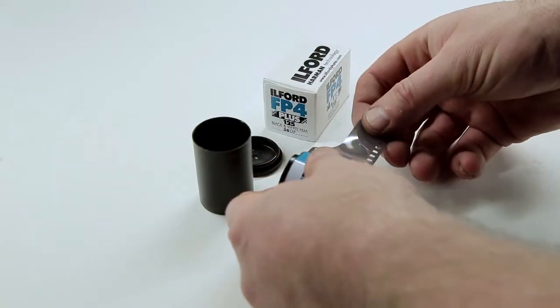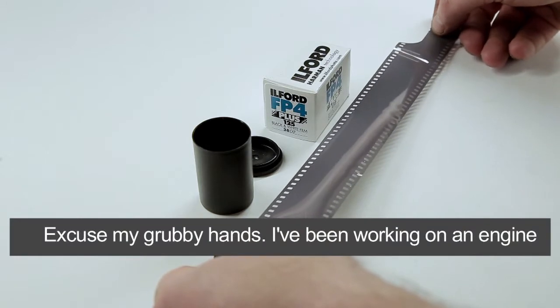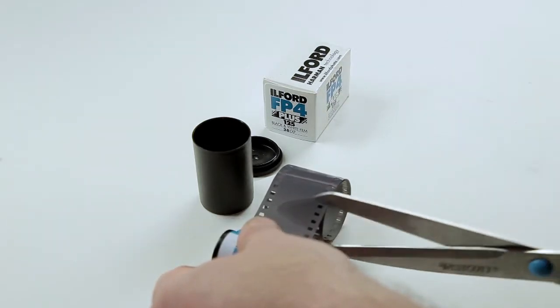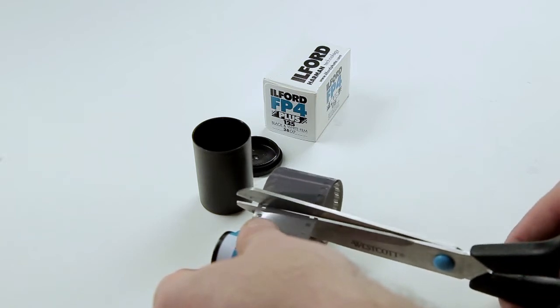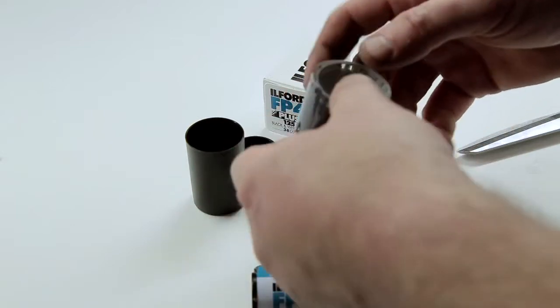I'm starting off with a roll of FP4 125 film, 35 millimeter, and I'm going to cut a small piece of it. I don't want to use all of it, that would be a waste, so I'm just going to cut a small length and put the rest back in the canister.